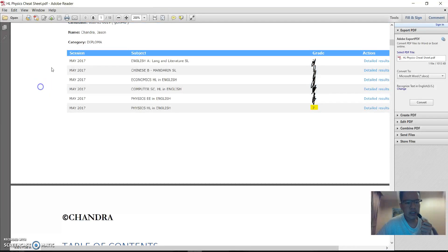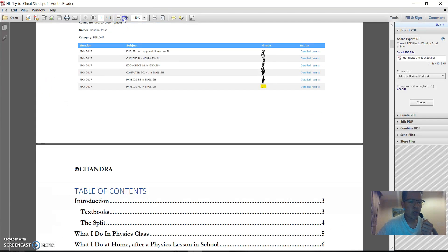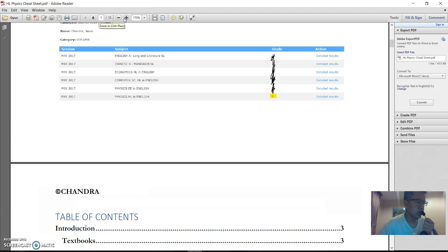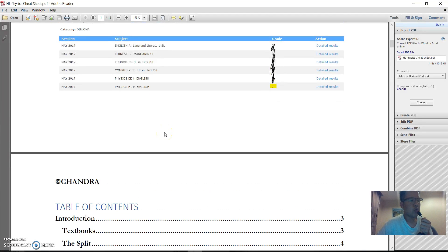I got a high 6 for my paper 1, a high 6 for my paper 2, a very high 7 for my paper 3 which is the astrophysics option, and a 23 out of 24 which is near perfect for my internal assessment.